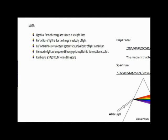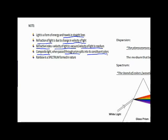Let us recall that light is a form of energy and always travels in straight lines. The refraction of light is caused by the change in the velocity of light. The refractive index of a medium is defined as the velocity of light in a vacuum divided by the velocity of light in that medium. Composite light, such as sunlight, when passed through a prism, splits into its constituent colors.